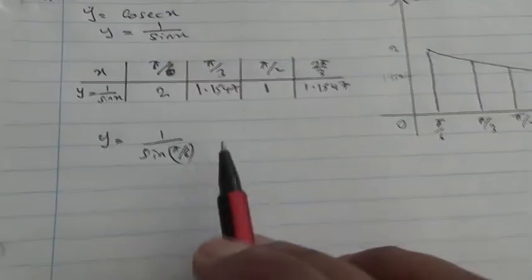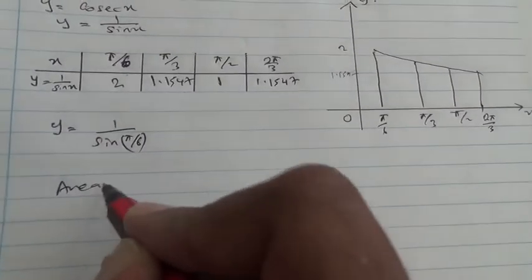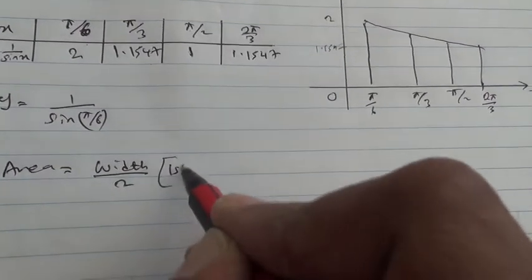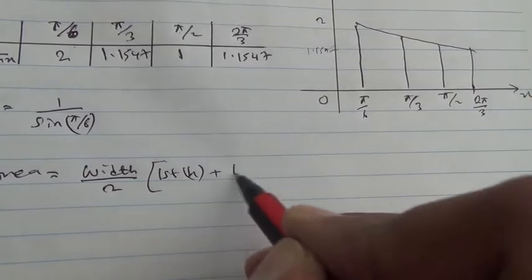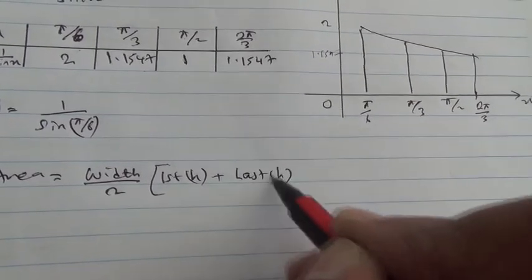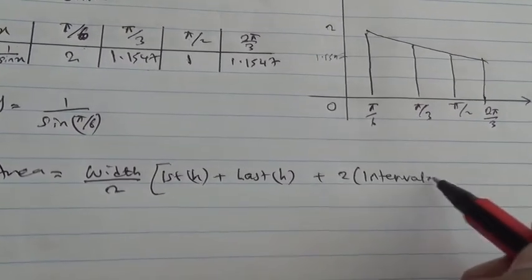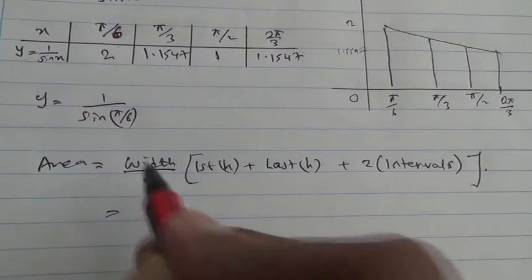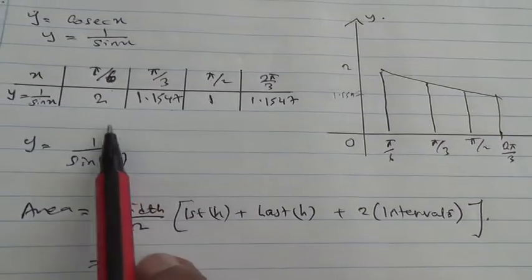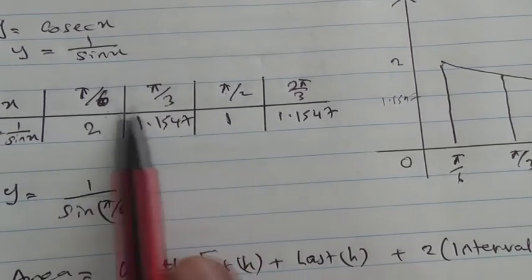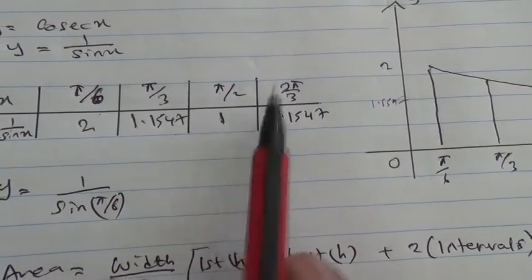What is the formula to find the area? Area equals the width divided by two times the first height plus the last height plus two times all the intervals. So what is the width? Pi upon 6 goes to pi upon 3, you have to add pi upon 6, so that's going to be pi upon 6 divided by two.